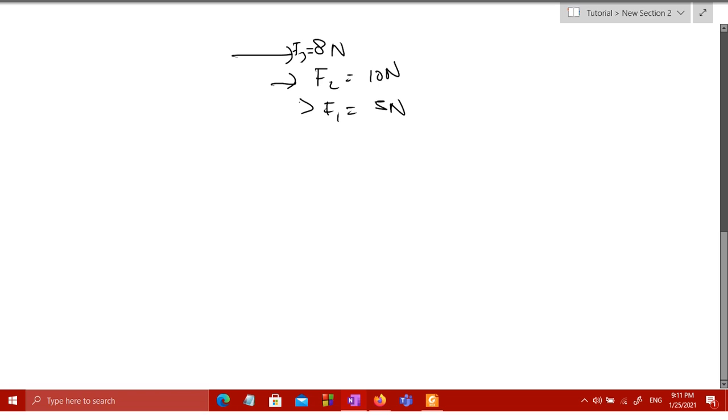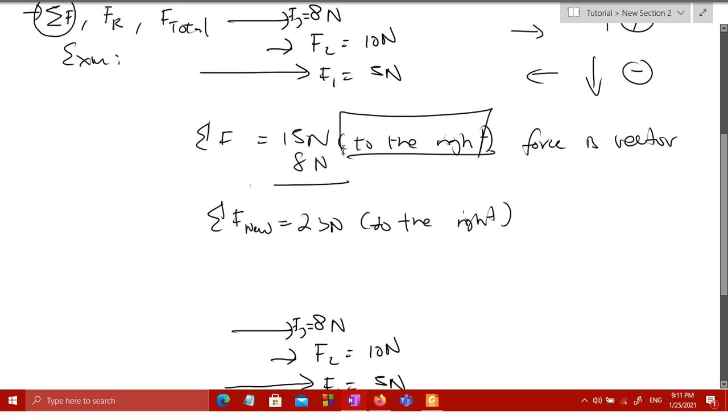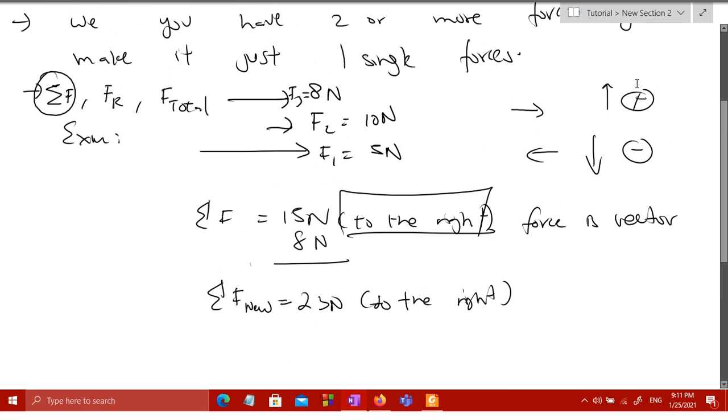Let me copy this. Basically, the length of the vector indicates its magnitude. This must be longer than 8 Newton, and this must be shorter than 8 Newton - probably like this. I made a mistake just now. Remember, the length of this arrow indicates its magnitude, so please remember that.